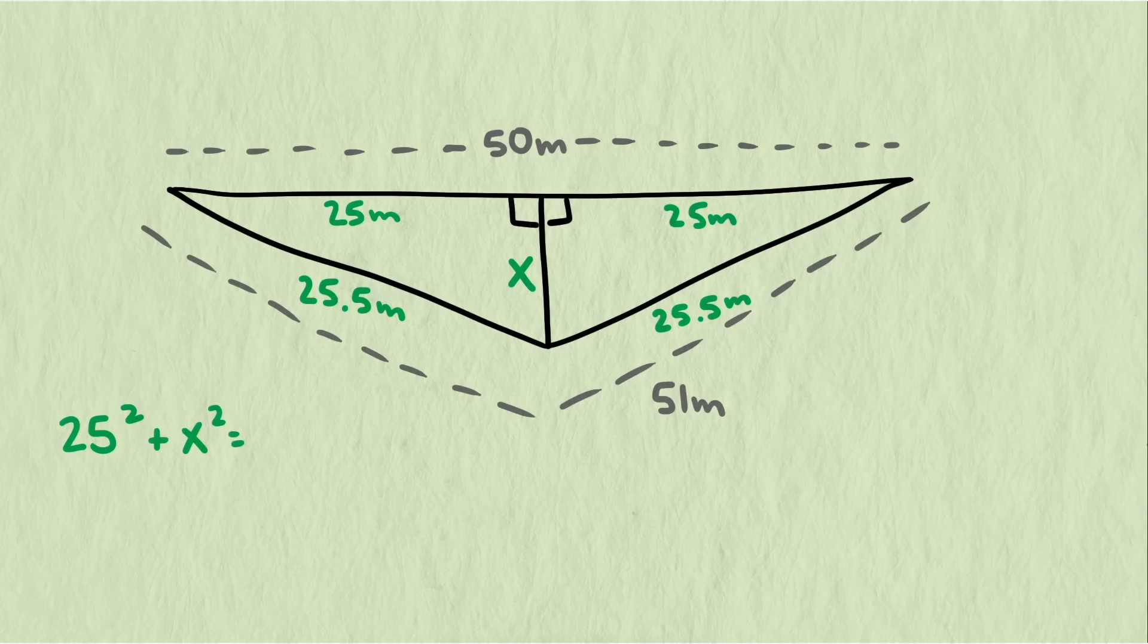Using the Pythagorean theorem to solve for the third side gives us the distance your friend dropped. Very close to five meters. How close was your guess?